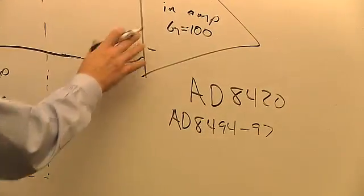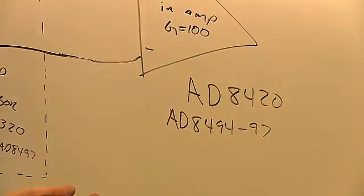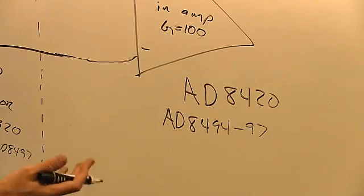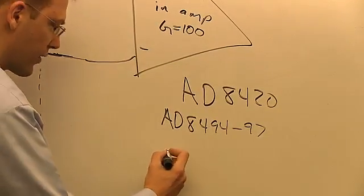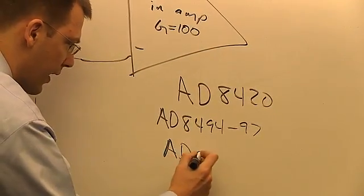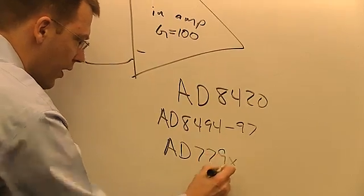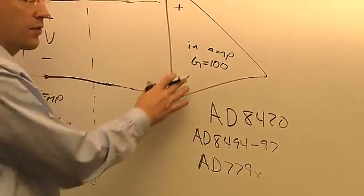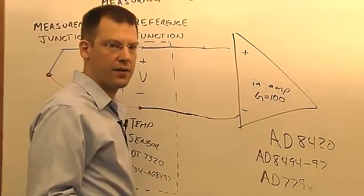And then, you don't have to use a standalone instrumentation amplifier. You can use an instrumentation amplifier in a sigma delta converter. For example, we have a line of parts called the AD779X, which include both the instrumentation amplifier and the sigma delta converter.